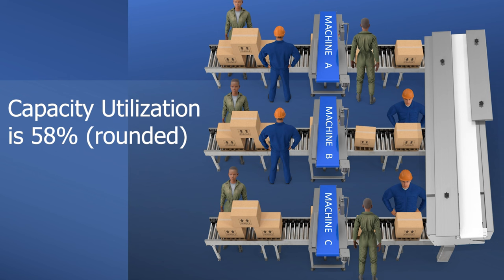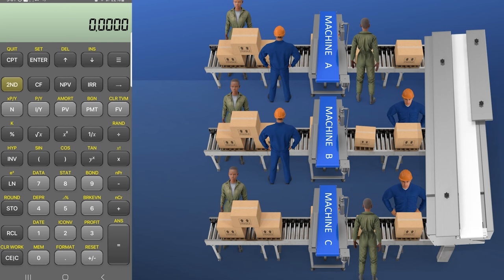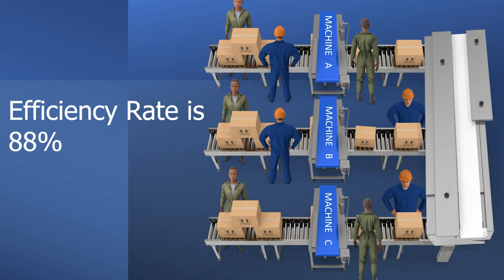Now for the efficiency rate: actual output appears in both formulas and always goes first. For efficiency rate, actual output of 2,775 is divided by effective capacity of 3,150. That gives us 88%. This means that based on the capacity we are using, we are very efficient in using it. You want this number to be high. If it were low, it would mean you're not only at 57% of design capacity but also not being efficient in utilizing that capacity.